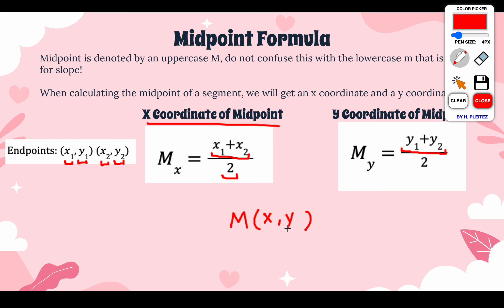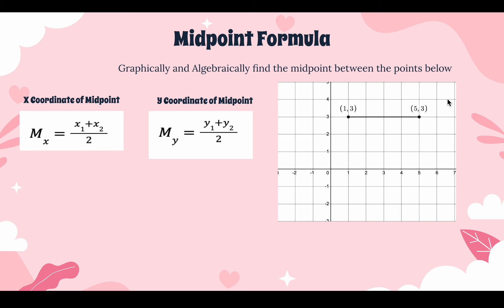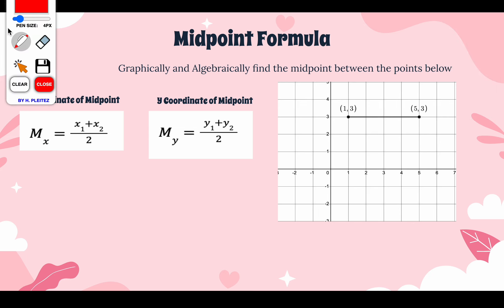We're going to be dealing with a few different examples, talking about solving for the midpoint algebraically using these formulas, and graphically as well. In this question, we're graphically and algebraically going to find the midpoint between these two points. Our endpoints right now are (1, 3) and (5, 3). So let's label — just like we do for slope — x1, y1 and x2, y2, because this helps us get a better idea of what's going on.